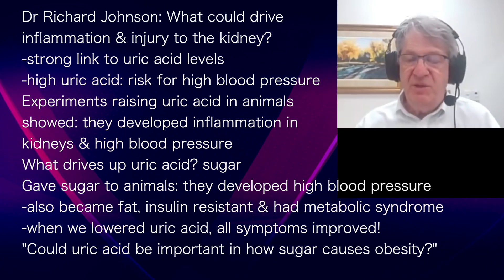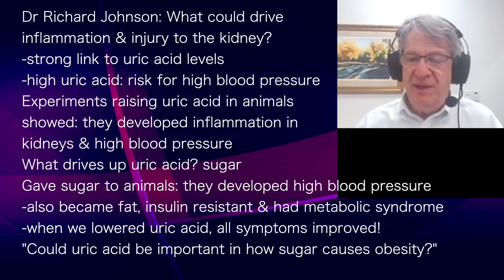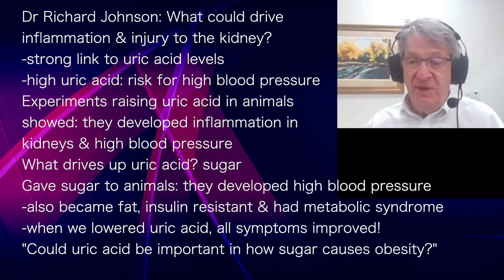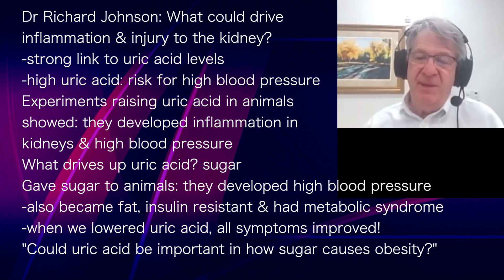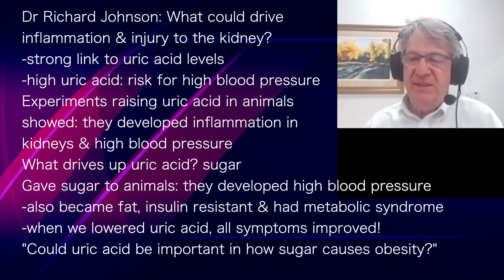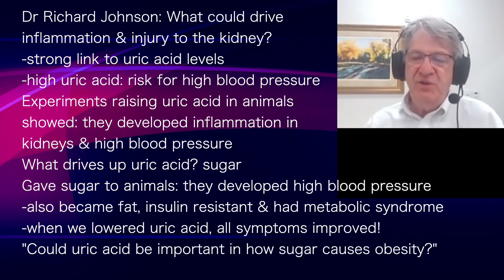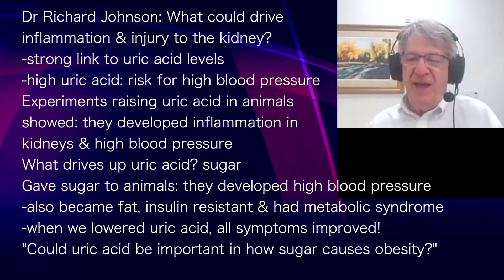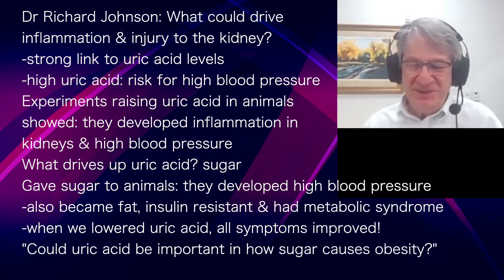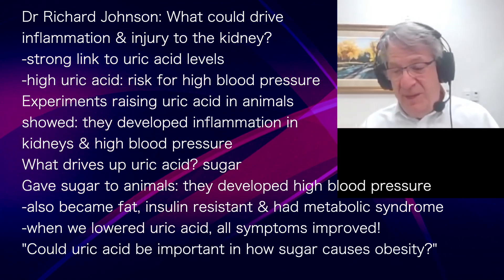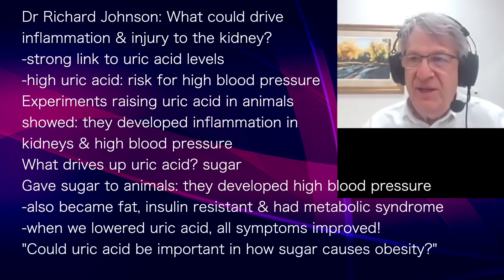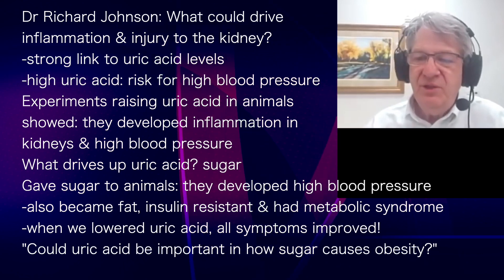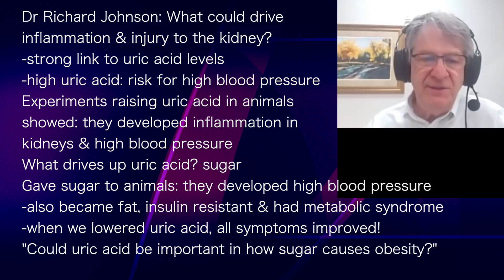When we gave sugar to animals, they also became fat, became insulin resistant, and developed all the features we call metabolic syndrome. When we lowered the uric acid, we improved all of those. Oh my gosh — could uric acid be important in the way sugar causes obesity?